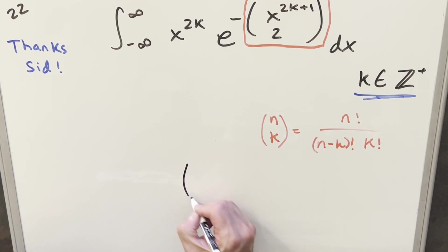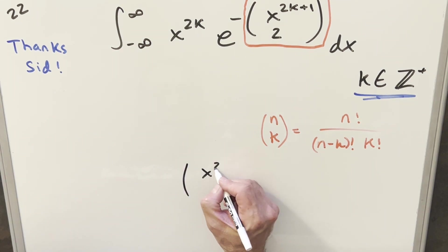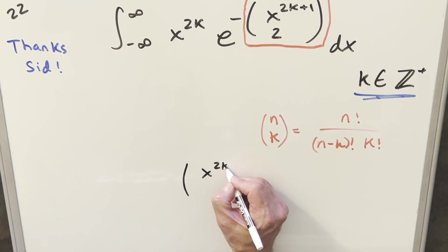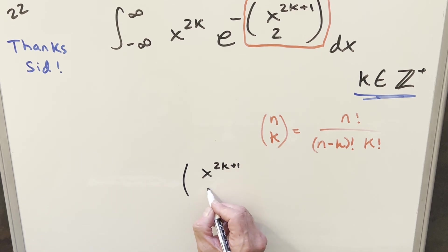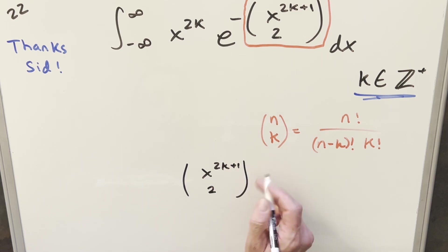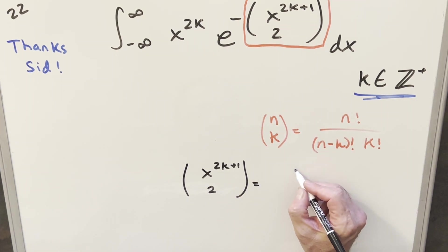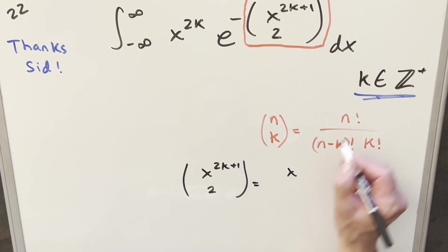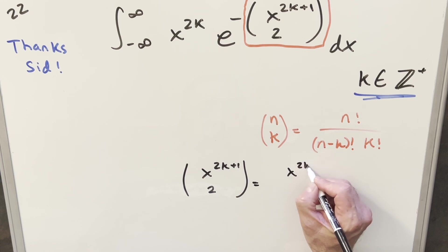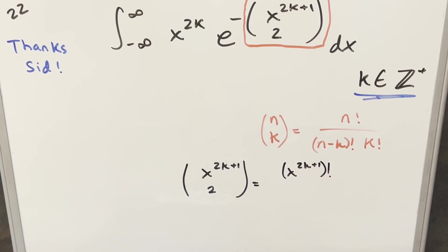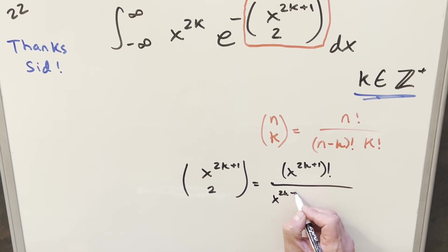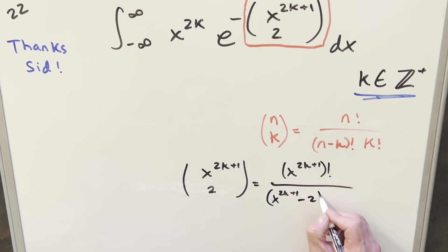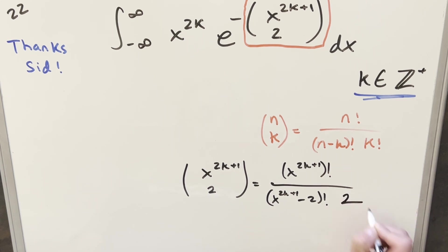Putting this to use on what we have here: our n value is going to be x to the 2k plus 1, and the k value is going to be just 2 — not to confuse this k with the other k. So we get x to the 2k plus 1 factorial over (x to the 2k plus 1 minus 2) factorial times 2 factorial. Since 2 factorial is just 2, we write that in as a 2.